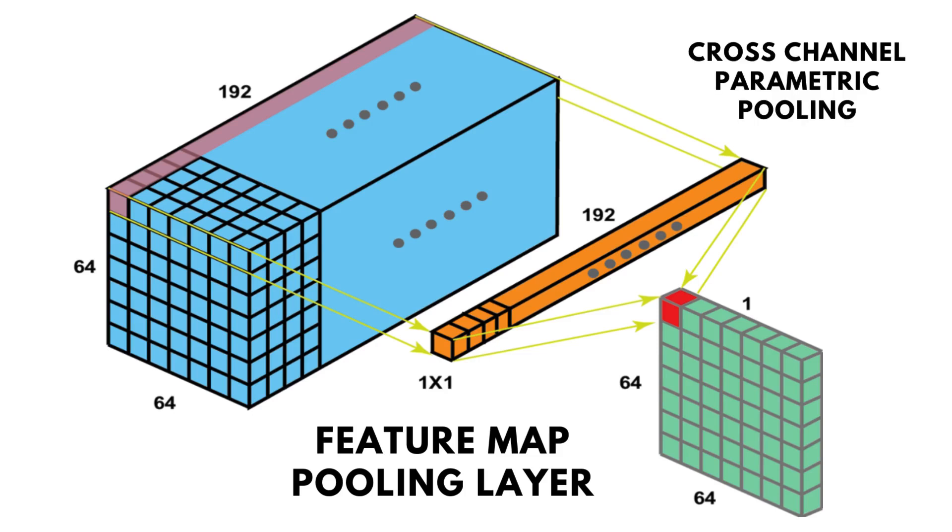In other papers, it's called cross-channel parametric pooling, which makes sense since it's a pooling operation acting across channels and has learnable weights. Other names include linear weighting or a projection with non-linearity. All of these names ring true to what the 1x1 convolution is actually doing.